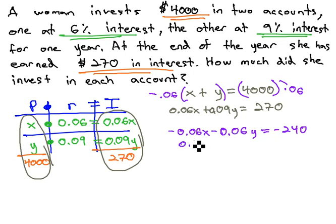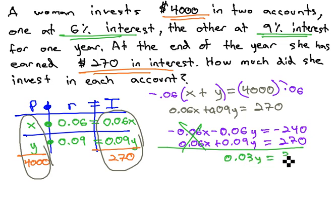The other equation is still the same, .06x plus .09y equals 270. When we combine the equations together, the x's eliminate, and we get .03y equals 30.